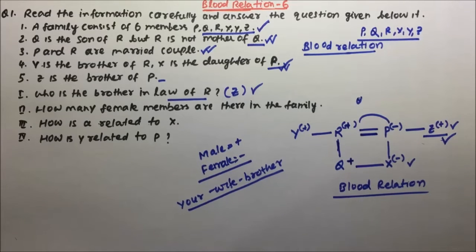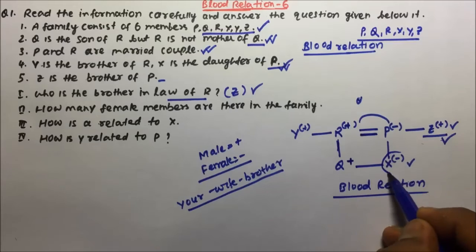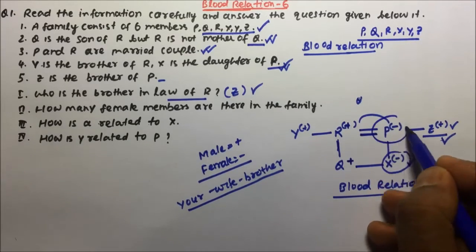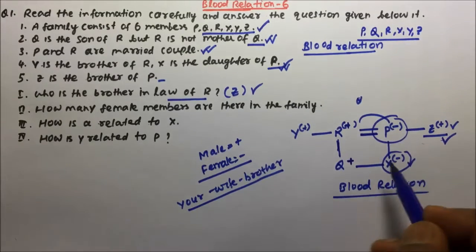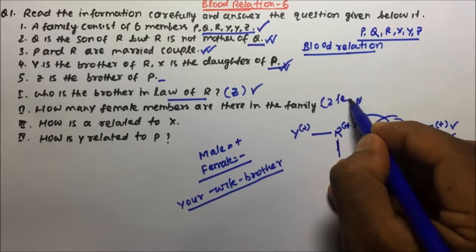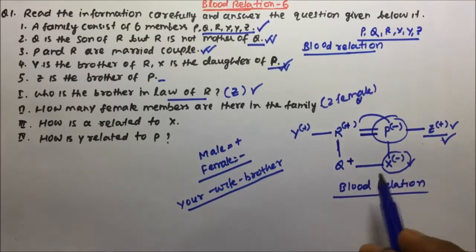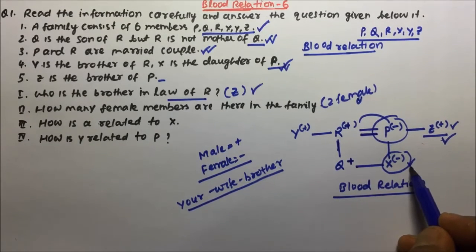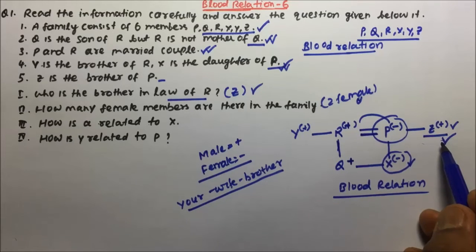Let's move to question number two. How many female members are there in the family? So if you will see female members, X is a female and P is a female, so there are two female members in the family. If they will talk about the male members, then out of six members two are female then other four will be male.